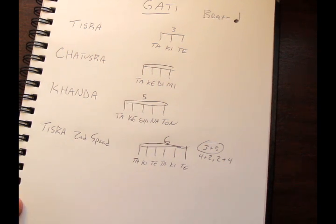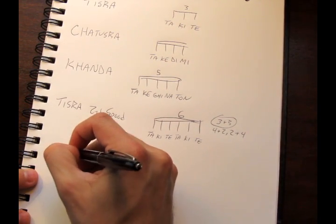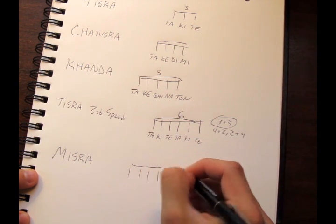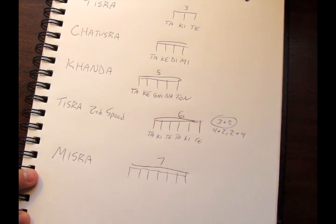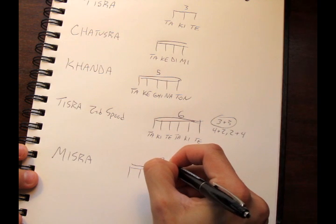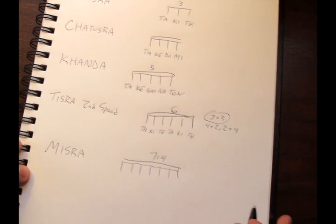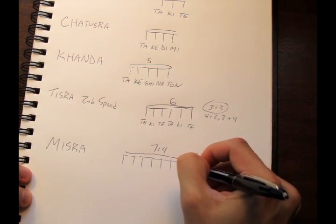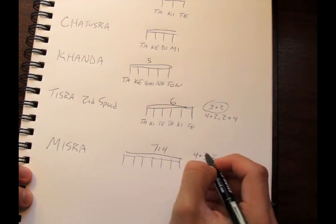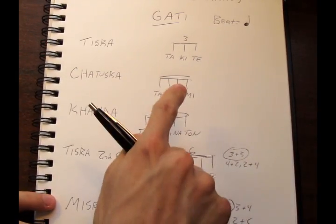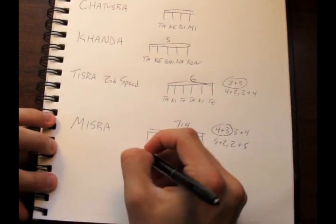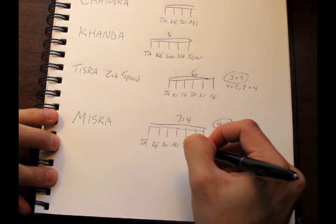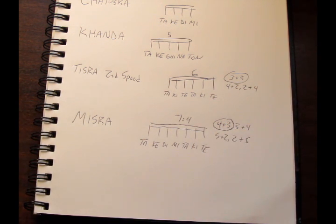The next prime number, and the last gati we will go over, is called misra — a seventh tuplet. If I put a seven on top, that means seven in the space of four. There are many ways to add up to seven, like four plus three, three plus four, five plus two, two plus five, etc. We're going to be using the four plus three pattern, using syllables ta-ke-di-mi and ta-ki-ta combined.